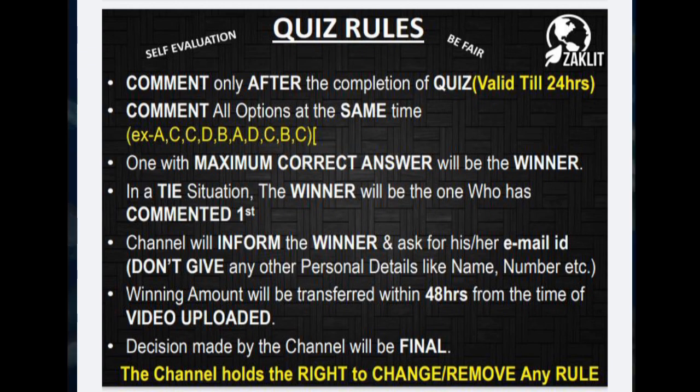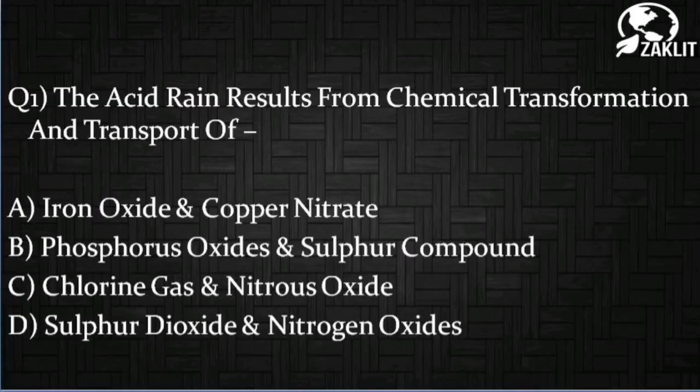Here we go for the first question. The first question is: acid rain results from chemical transformation and transport of which of the following elements?